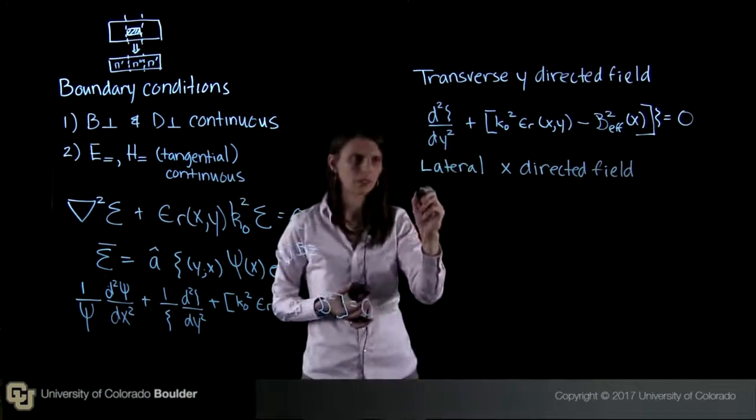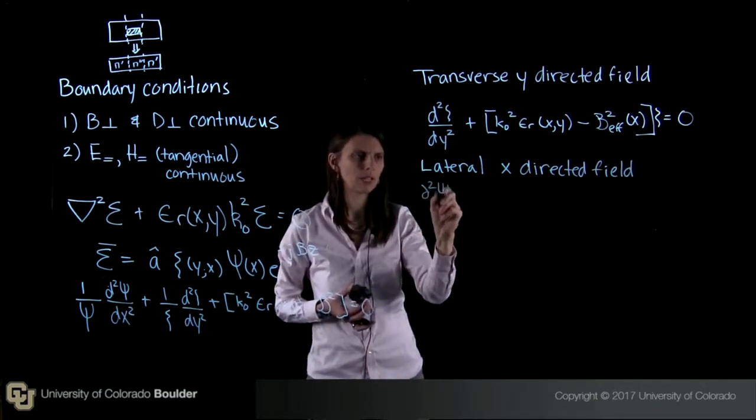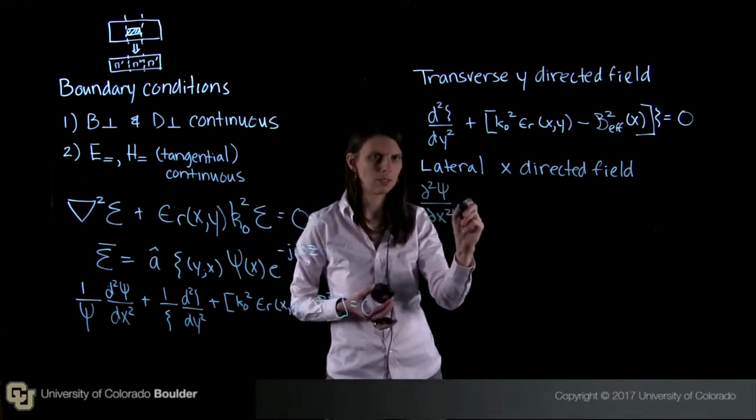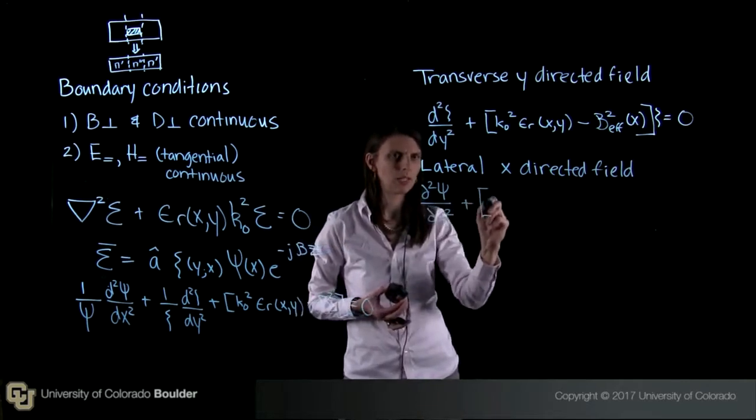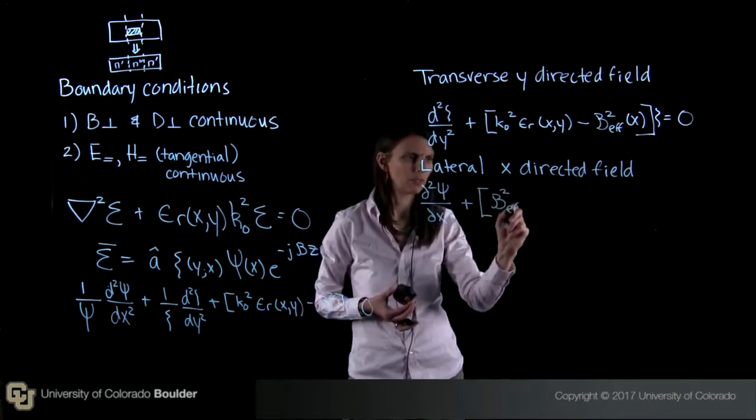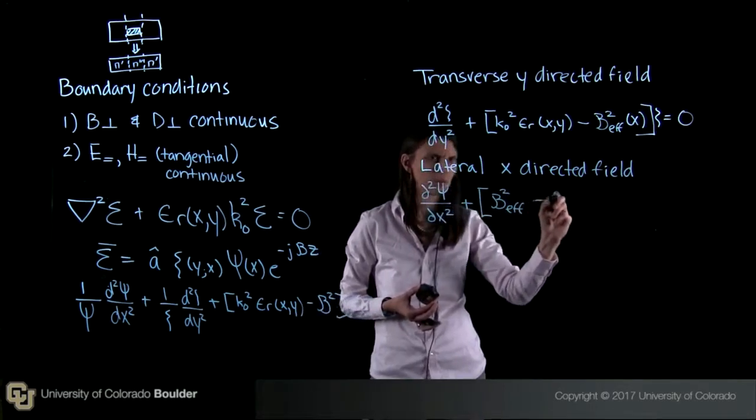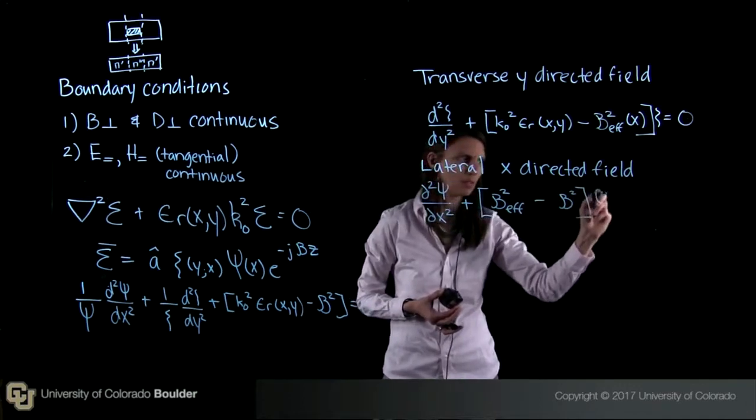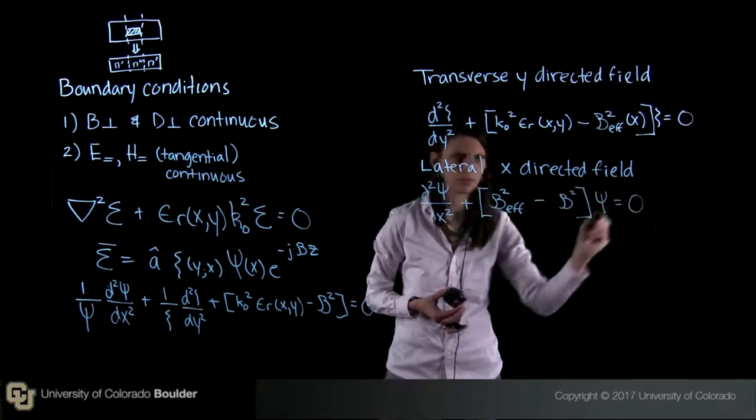So here we have the second derivative of psi with respect to x plus and then here we're going to have beta squared effective minus beta squared psi equals 0.